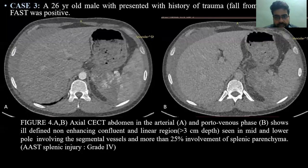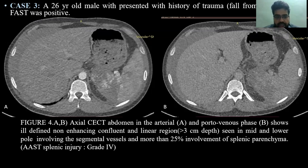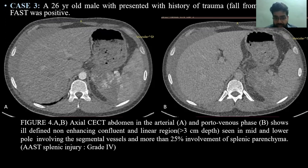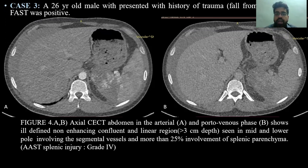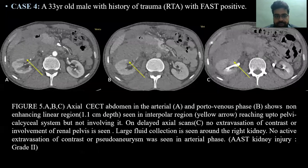Case 3: A 26-year-old male with history of trauma from a fall from height. Axial CECT in the arterial and portal venous phases shows ill-defined non-enhancing confluent linear regions with depth more than 3 cm, involving the mid and lower pole, and longer segmental vessels with more than 25% devascularization of the splenic parenchyma. This was graded as AAST splenic injury grade 4.